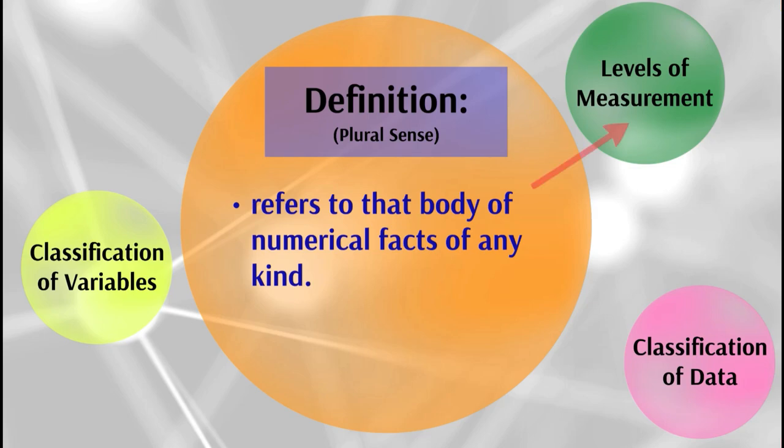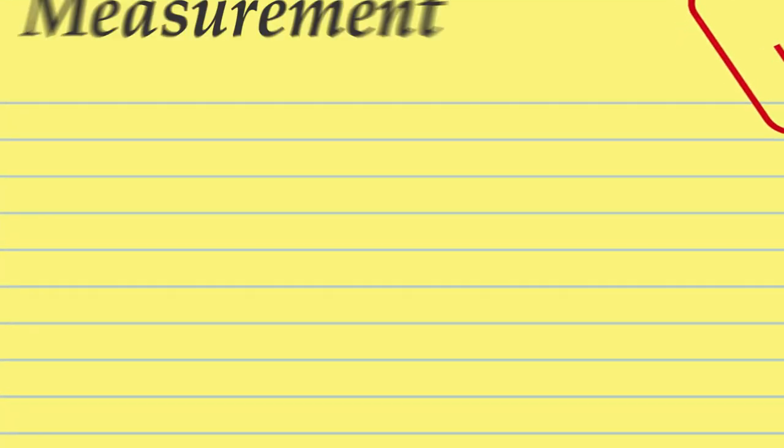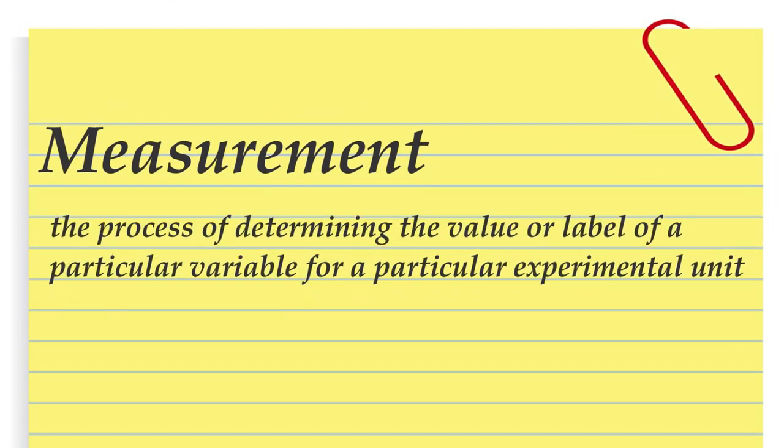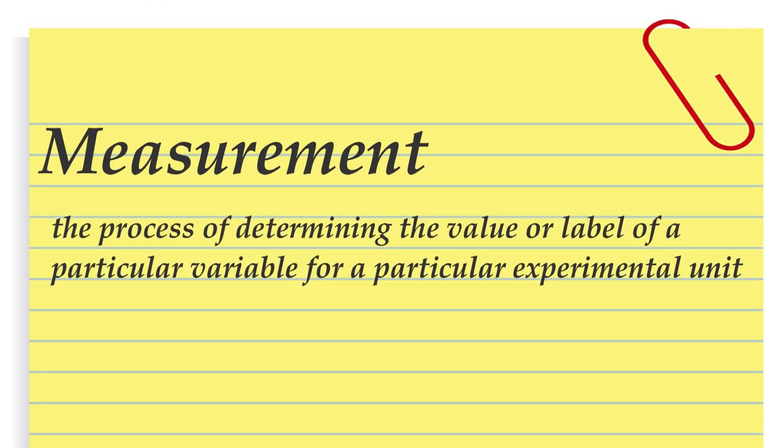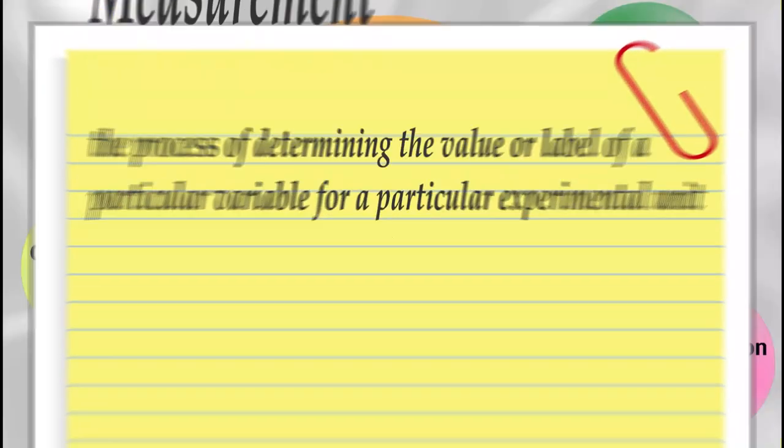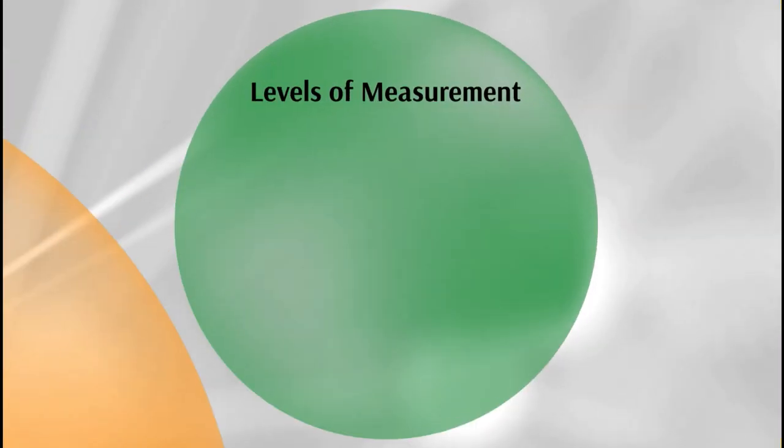The levels of measurement, classification of variables, and classification of data. We define measurement to be the process of determining the value or label of a particular variable for a particular experimental unit. Let's see what we have under the levels of measurement.